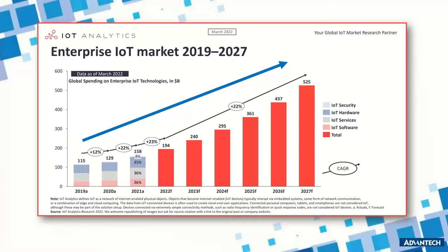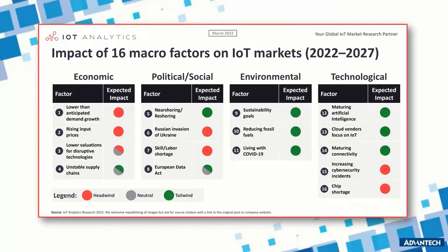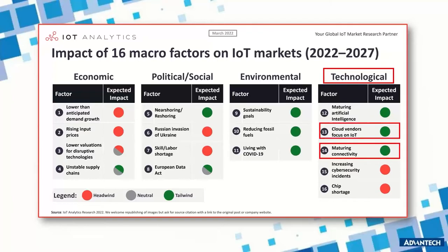Although the global market has been hit by supply and labor shortages, we believe IoT will continue as a hot topic with more projects to be rolled out. IoT Analytics also listed the impact of 16 macro factors on the IoT market from 2022 to 2027. Despite various factors, the technology portion — vendor focus on IoT and majority connectivity — still brings a positive contribution towards market growth.